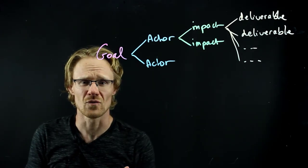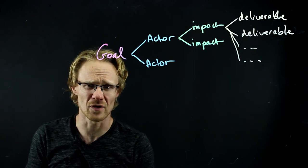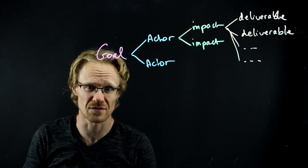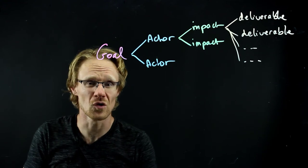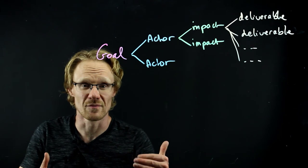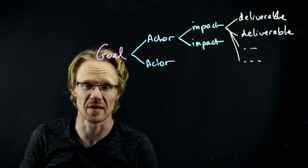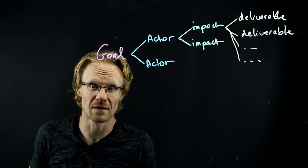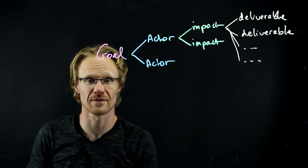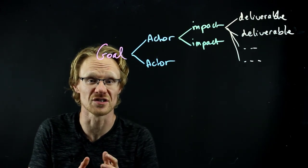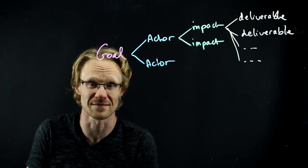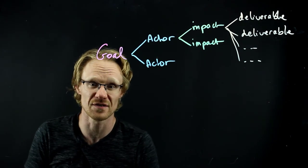It's the antidote to the feature factory — this mode of working where so many organizations fall into, where you just churn features after features like a factory, with no link to the business goal. Typically people want to deliver as much as possible from their backlog — the more, the better. Here instead, you want to find the shortest path through the map, the shortest path that lets you achieve your goal and deliver value, because that's what actually matters, not delivering features after features.